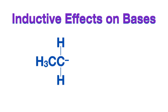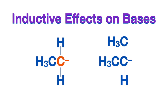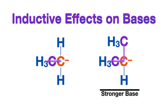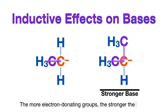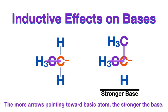Let's look at these two compounds where the basic atom in each is the negatively charged carbon. In the left compound, the negatively charged carbon has one other carbon attached to it, which has an electron donating effect toward it, making that carbon a little bit more negative. Whereas in the right compound, there are two other carbons that cause electron donating effects onto the negatively charged carbon, making it even more negative and therefore a stronger base. The more electron donating groups there are attached to the basic atom, the stronger the base — or think of it as the more arrows pointing toward the basic atom, the stronger the base.